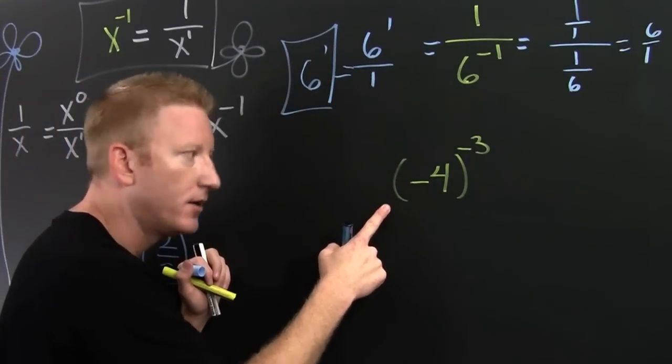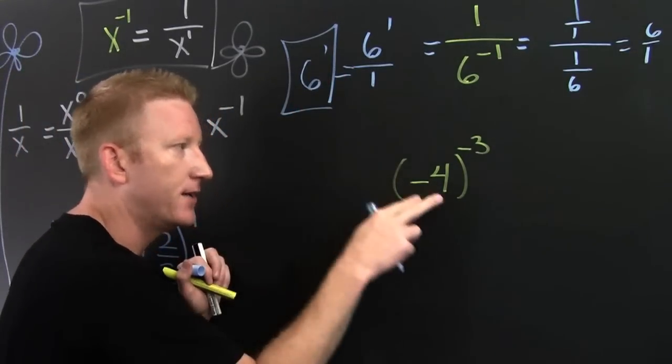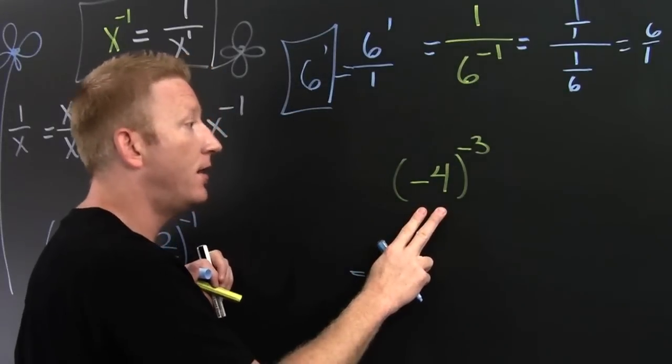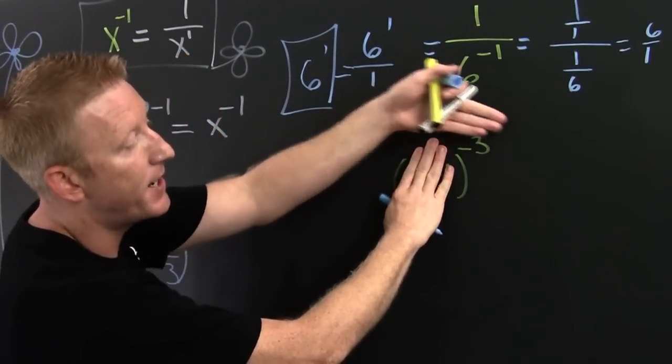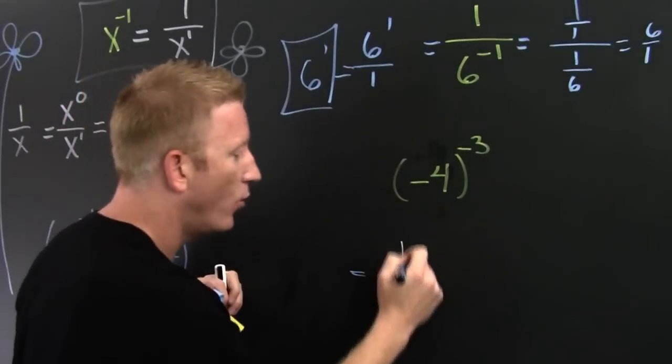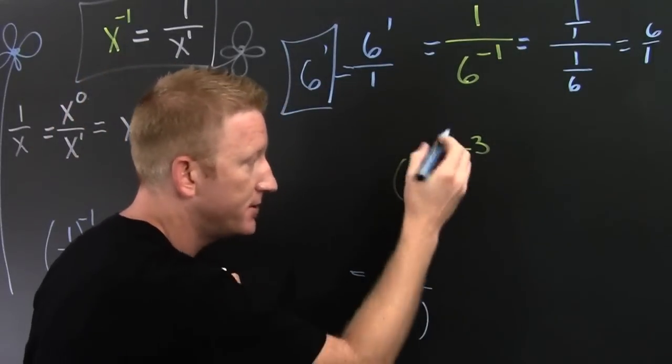Down here, what happens there? Let's look. The negative is in the exponent. So we're going to see this as to the minus 3. So we're going to have 1 over to the 3.